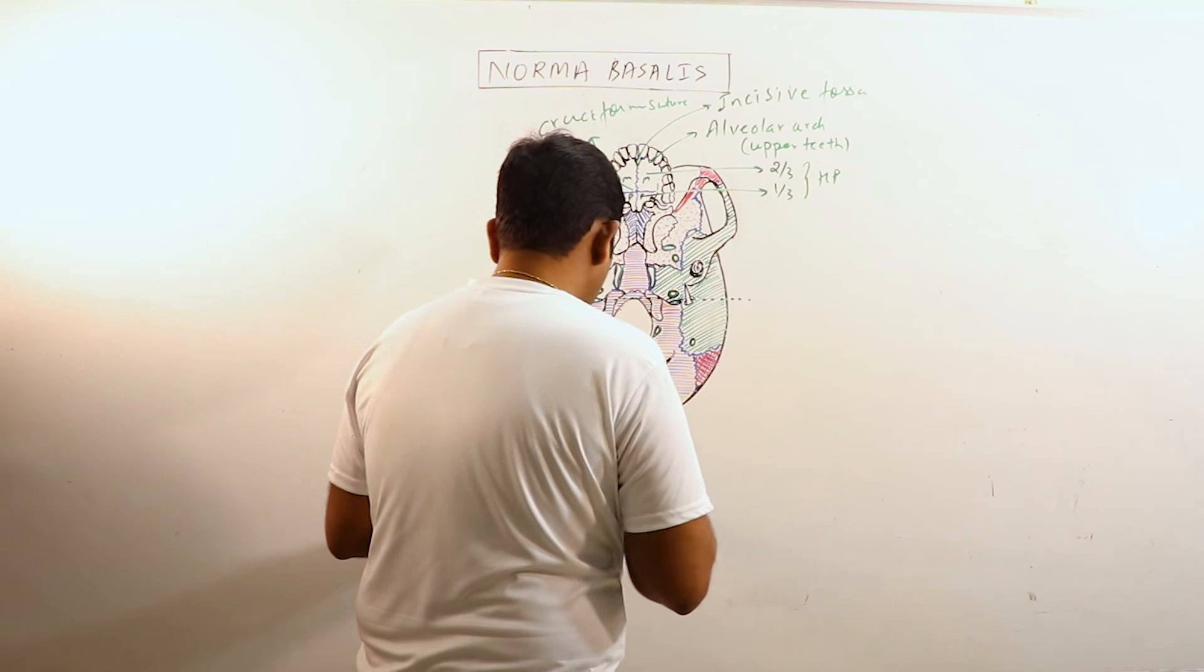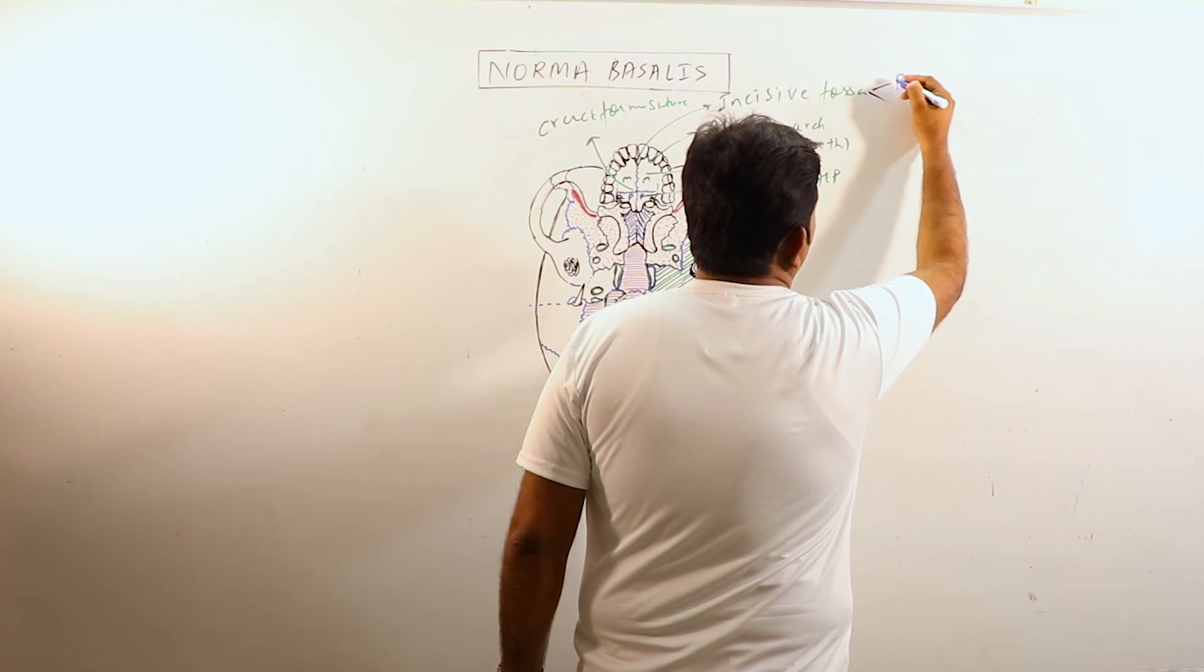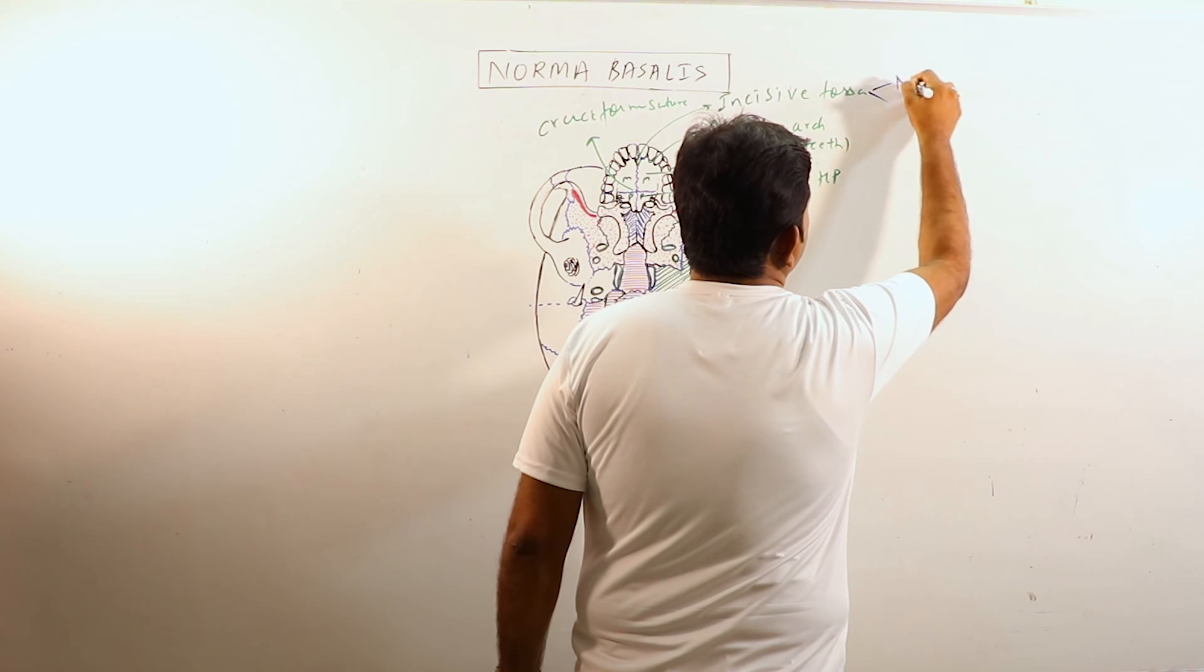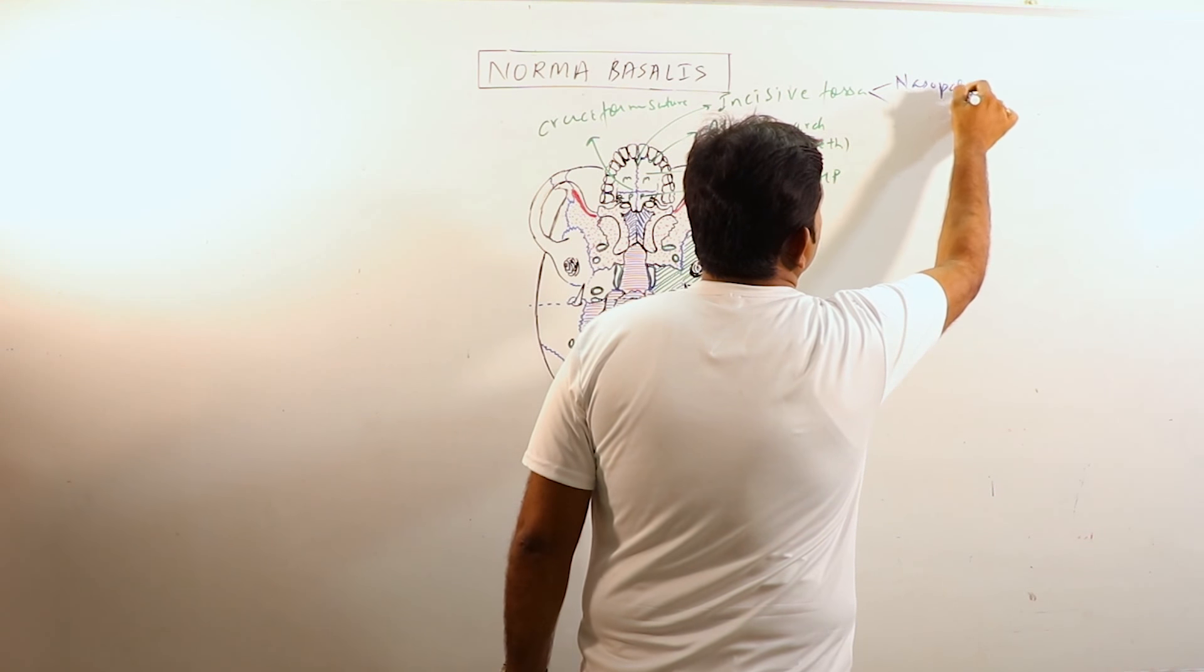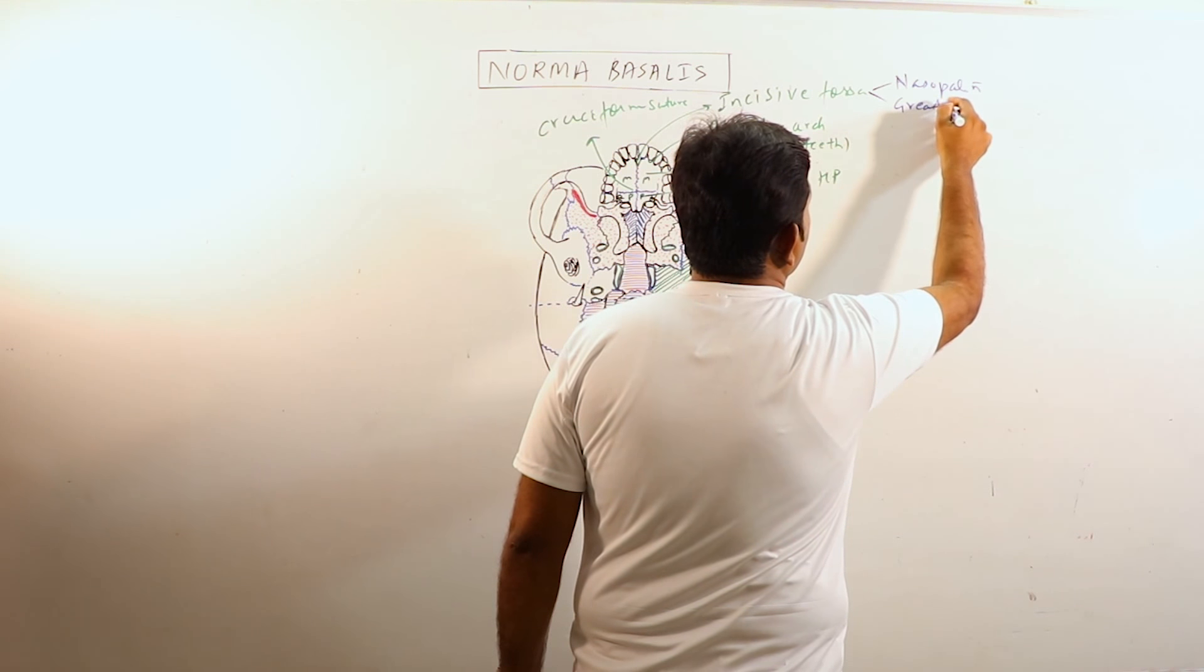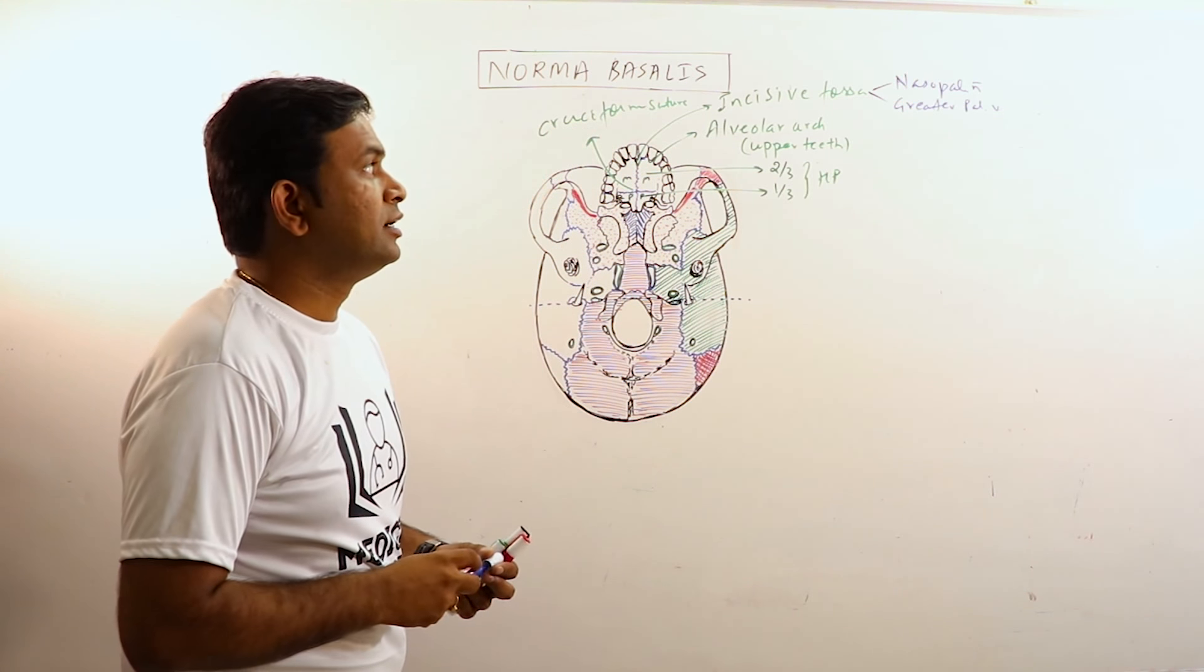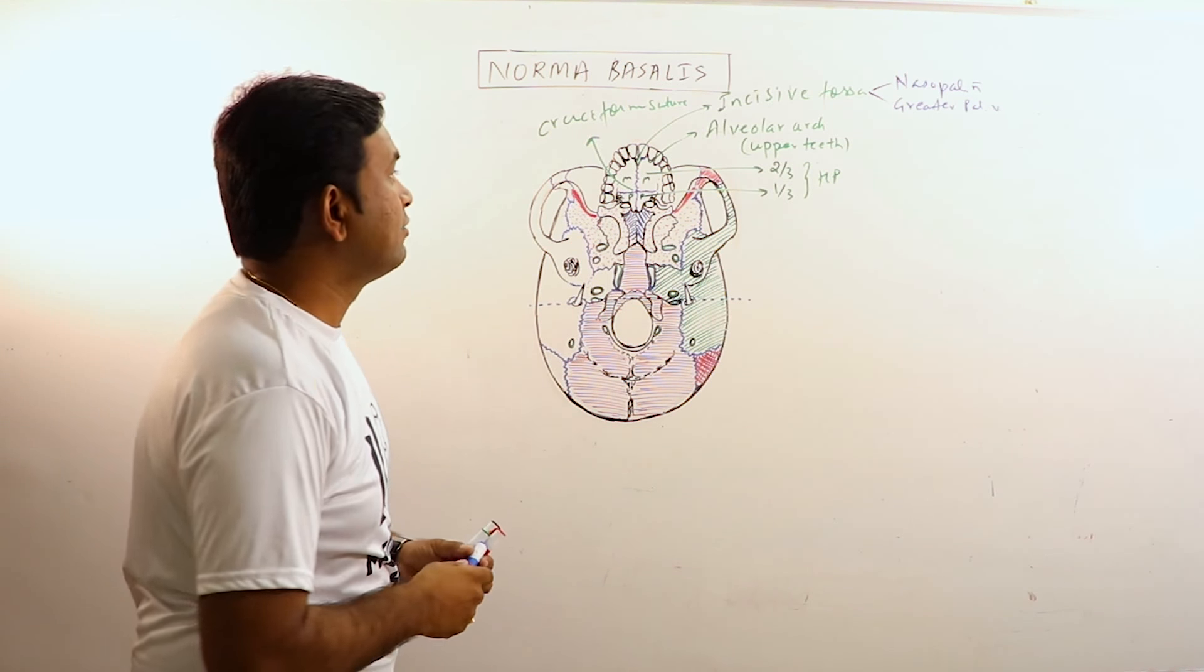Through the incisive fossa, the nasopalatine nerve passes and the greater palatine vessels cross. So it transmits the nasopalatine nerves and the greater palatine vessels.